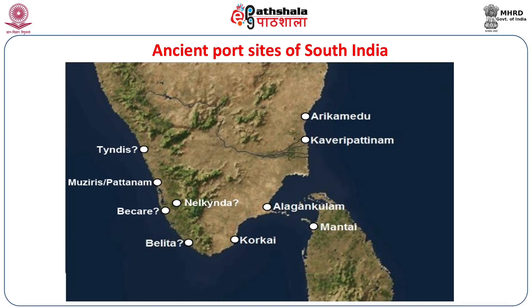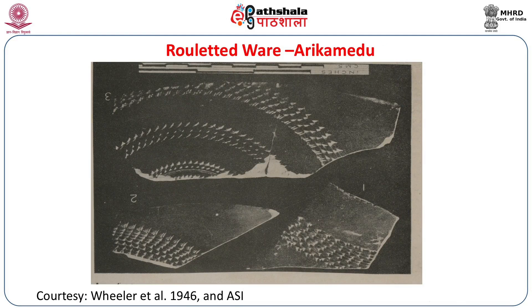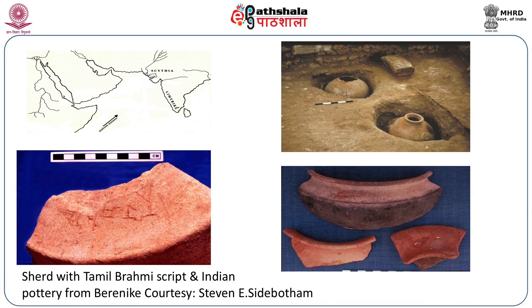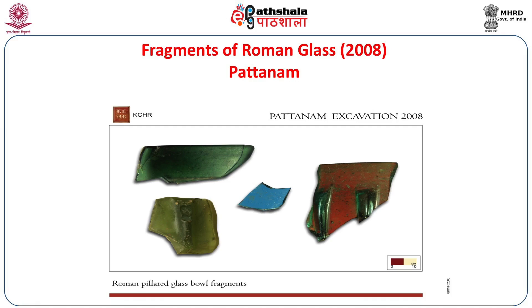A map shows the trade routes connecting the western parts of the Indian Ocean with India. Important early historic port sites of Tamil Nadu are referred to in Tamil literature and have produced a lot of material remains from excavations. Rouletted ware found at Arikamedu was one of the traded items. Pottery found in Egypt produced in South India also suggests that people from India were traveling and trading. A jar from the site of Berenike contained seven and a half kilos of pepper. Roman glass fragments found in Indian sites suggest glass bowls were imported to India.